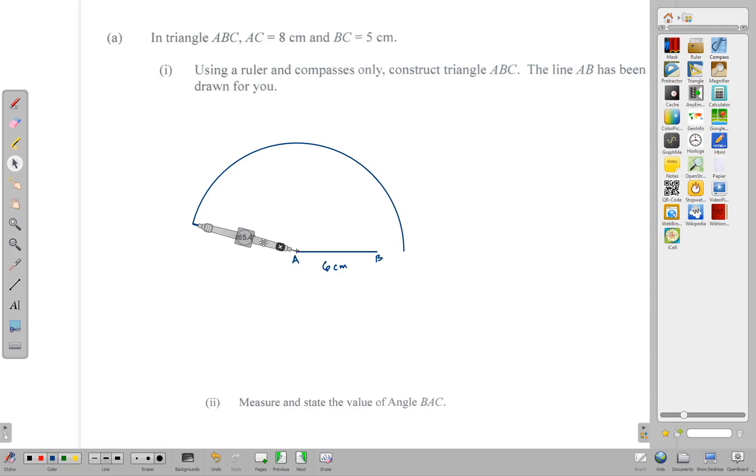Here's 8 centimeters on my digital compass. I'm going to put the point there right at the end and make an arc. Now make a big enough arc because you do not know exactly where your lines or arcs are going to intersect. Generally as a rule, just make a big enough arc so that once you finish you don't have to go back and do it over.